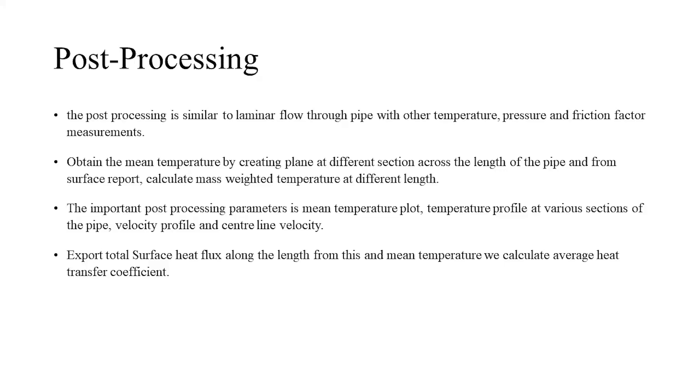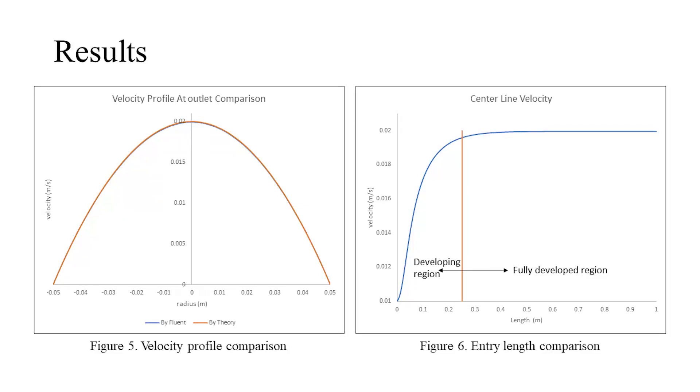The important post-processing parameters are mean temperature plot, temperature profile at various sections of the pipe, velocity profile, and centerline velocity. The figure on the left represents the hydrodynamic velocity profile at the outlet in comparison with the theoretical velocity profile. The figure on the right represents hydrodynamic entry length with respect to the theoretical entry length.